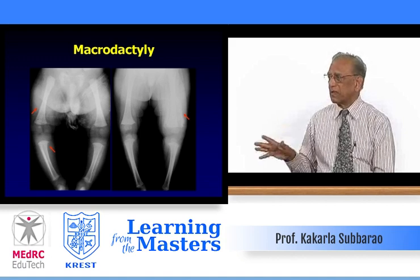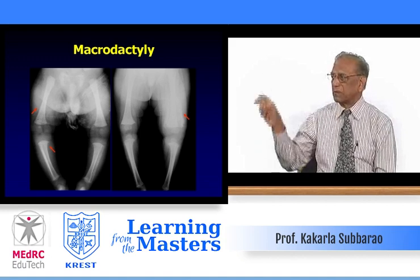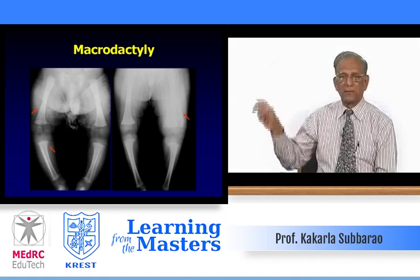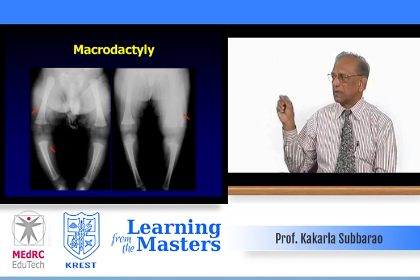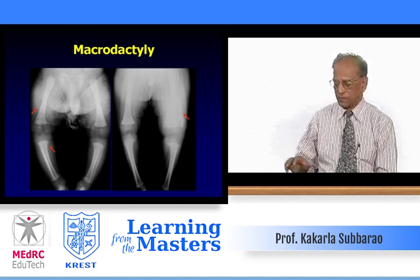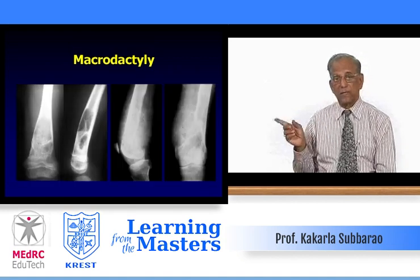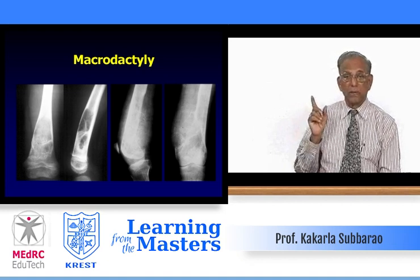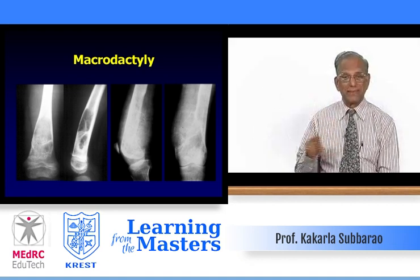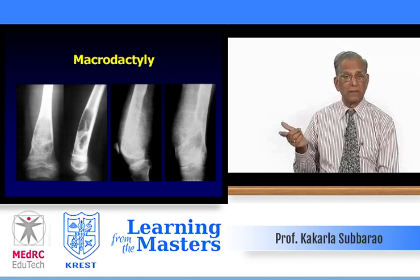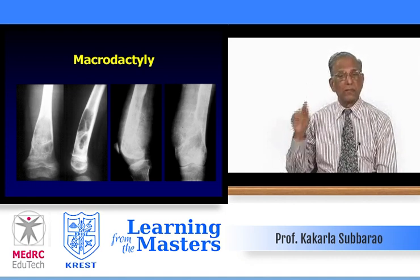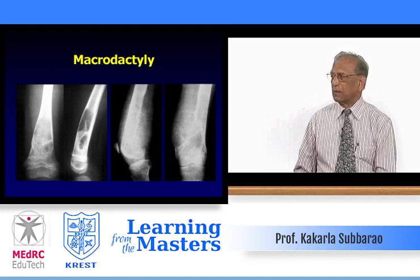On the right side, there is a subperiosteal hematoma extending along the shaft of the femur. If you look at the epiphyses, there are ring-like epiphyses. This is scurvy with subperiosteal hematoma. With scurvy, one must differentiate from parent abuse — the battered child — where there are multiple fractures or healing fractures, fresh fractures, bilateral and possibly asymmetrical because the child is beaten at different times.